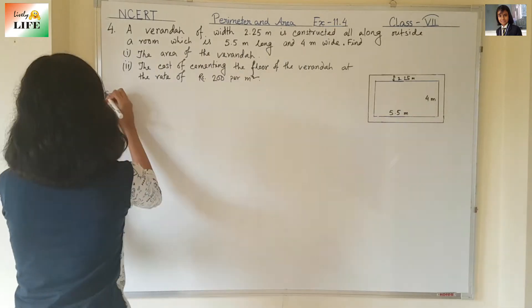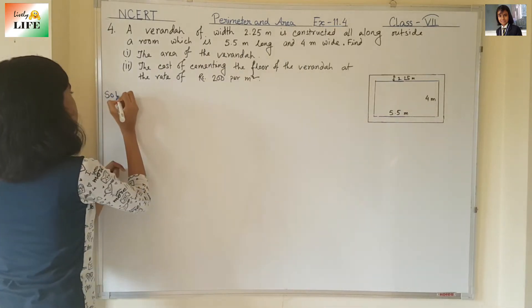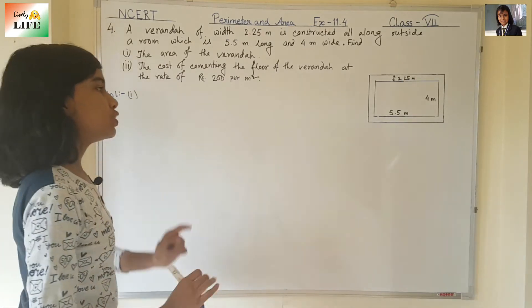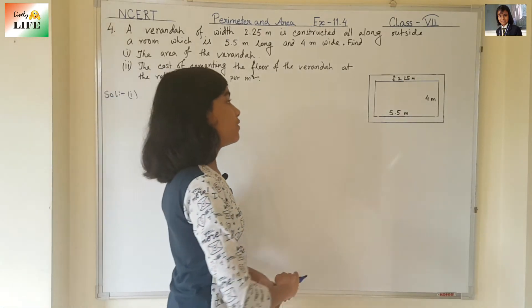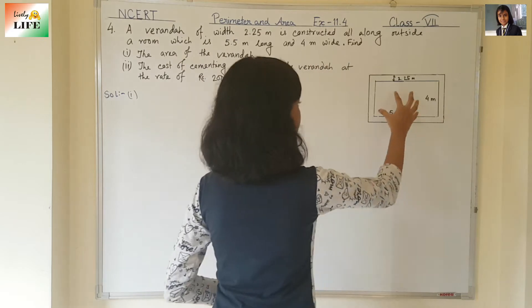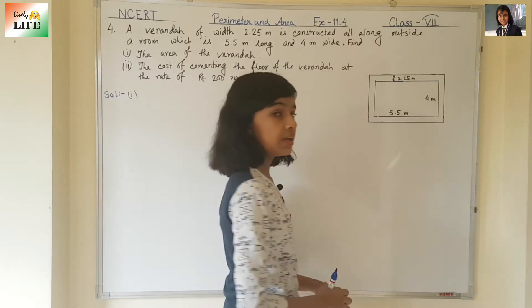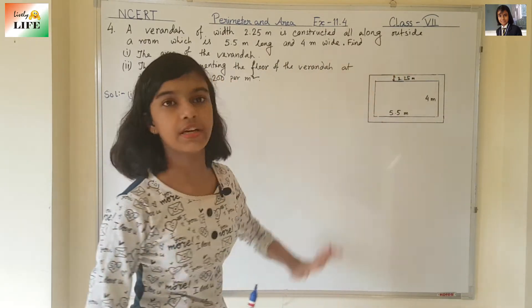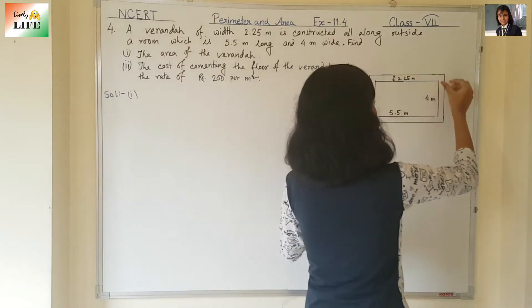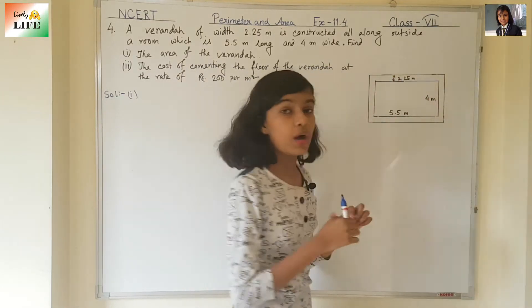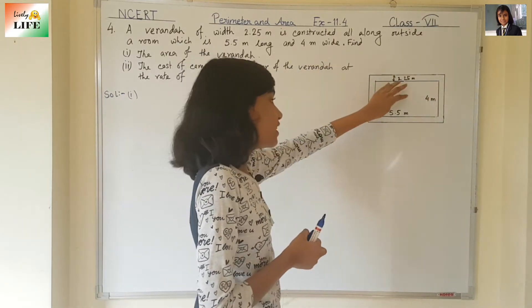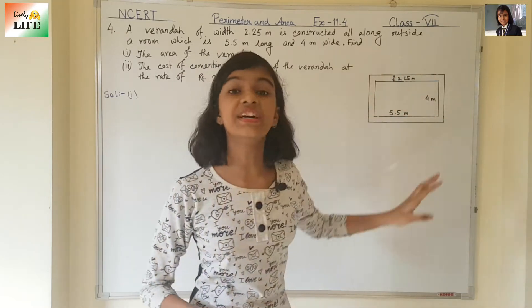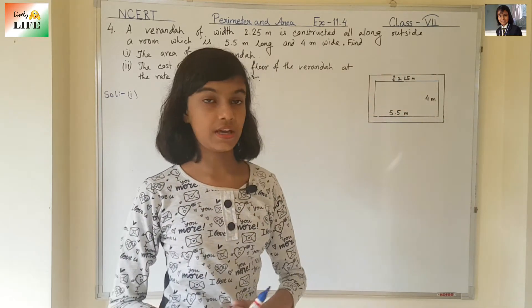So first let's find out the area of the veranda. For this, we need to find the area of the room and the area of the room along with the veranda. Then only we can get the area of the veranda — by subtracting the area of the room from the area of the room along with the veranda.